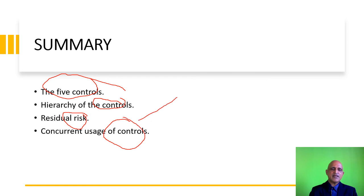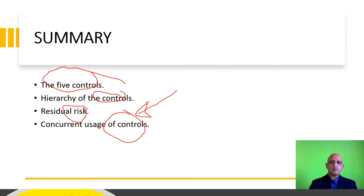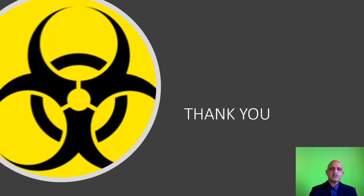This brings us to the end of this introductory module on risk mitigation. We have learned about the five controls, the hierarchy of controls, the concept of residual risk, and the concurrent usage of controls. I will delve into each of these controls in a series of lectures during this current week. Thank you very much for your participation, and I wish you a pleasant learning experience. Thank you, and stay biosafe.